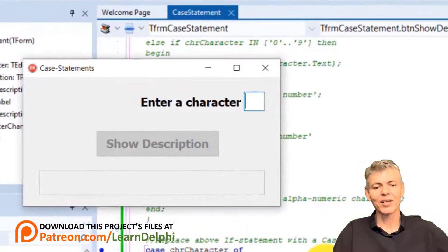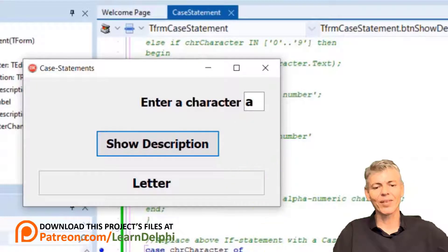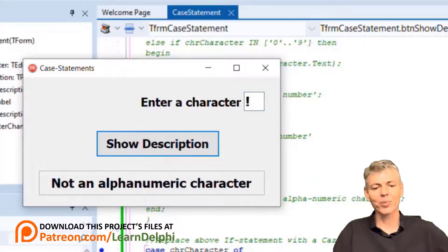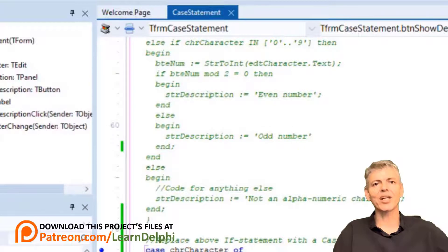Run the program. Type a lowercase a and click the button. The panel displays letter. Type 4 in the edit. The panel displays number. Type uppercase Z. It displays letter. Type 9. The output is number. Type an exclamation. The output is not an alphanumeric character. Close the form. That is how you write a simple case statement. It wasn't too difficult.